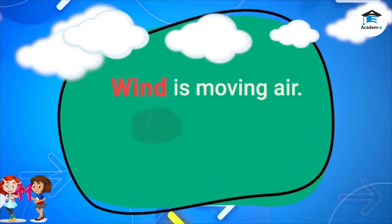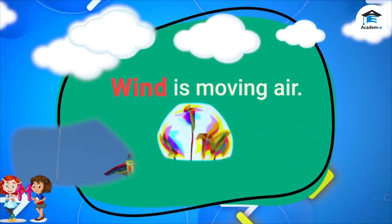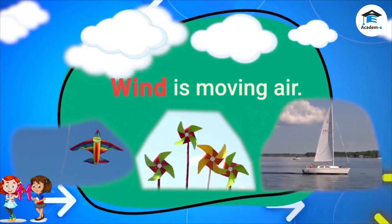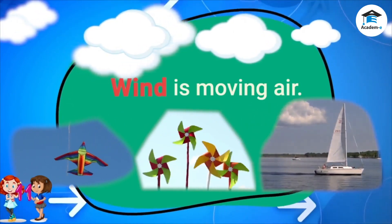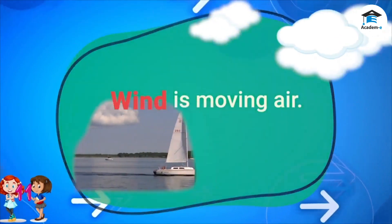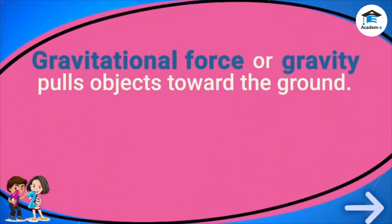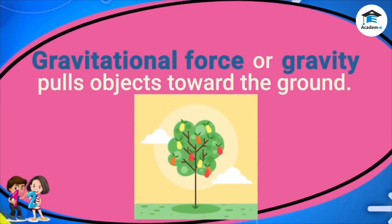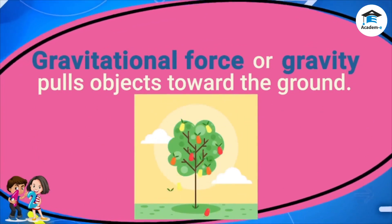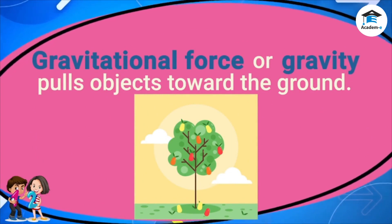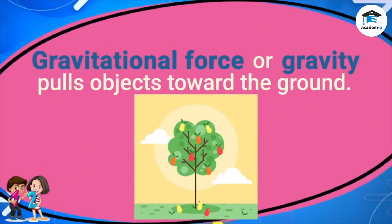Wind is moving air. It makes a kite fly and blows leaves and light objects like paper in the air. A sailboat moves when moving air pushes on its sail. Gravitational force or gravity pulls objects toward the ground. Objects thrown upward always fall to the ground because of gravity. Fruits and leaves from trees also fall to the ground because of gravity, which keeps many objects in place on earth.